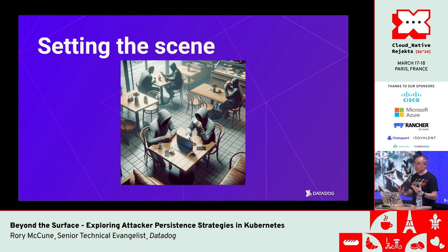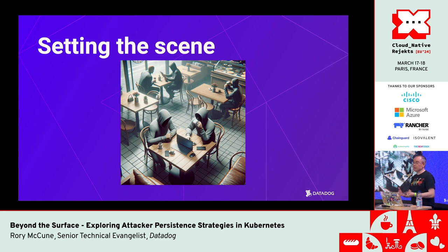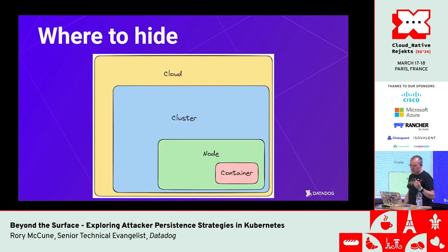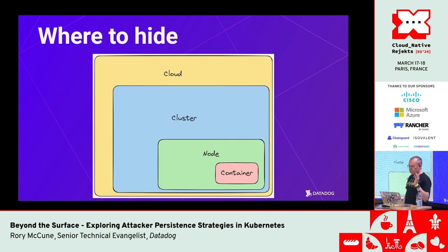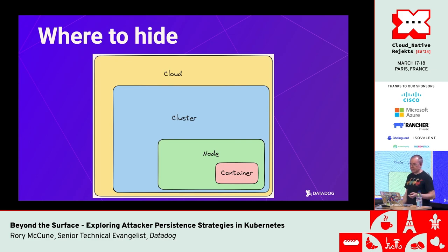They have half an hour — the duration of this talk — to try and persist in the cluster and keep access. The first thing they want is access to one of the cluster nodes, because once they've got that, they can start running their own code. They might hide in the cluster, in the container, or in the node. We're not going to talk about cloud today — that's a whole separate talk. We're focusing on clusters, nodes, and containers.